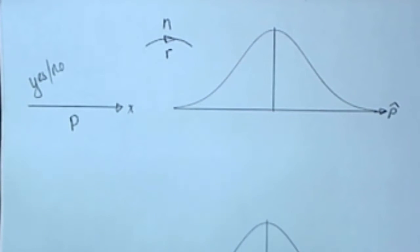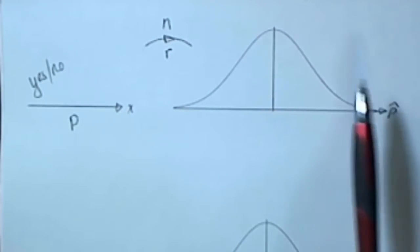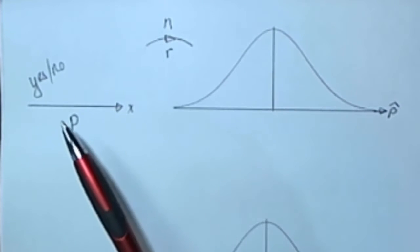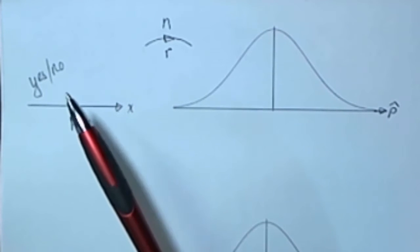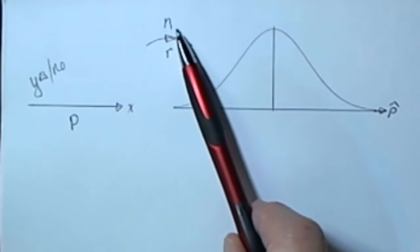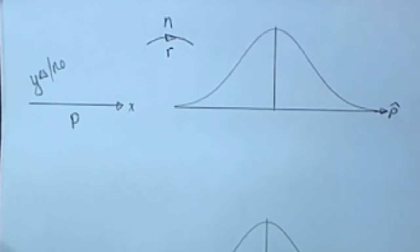So what we're going to think about is the distribution of sample proportions of all the samples of size N. We're thinking about looking at every single possible sample from this population of size N and we calculate the proportion for each of those.